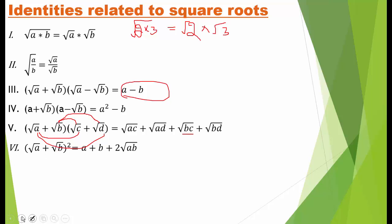The sixth and last identity: the square of root a plus root b, that is (root a plus root b) whole square. This is of the form (x plus y) whole square, which equals x squared plus y squared plus 2xy. So this becomes a plus b plus 2 root ab.